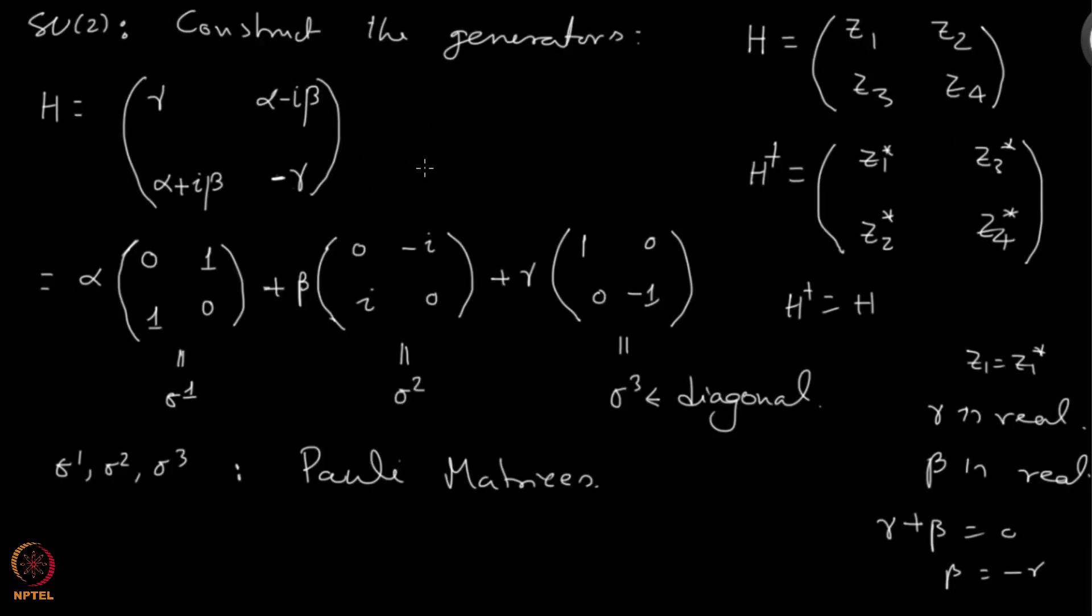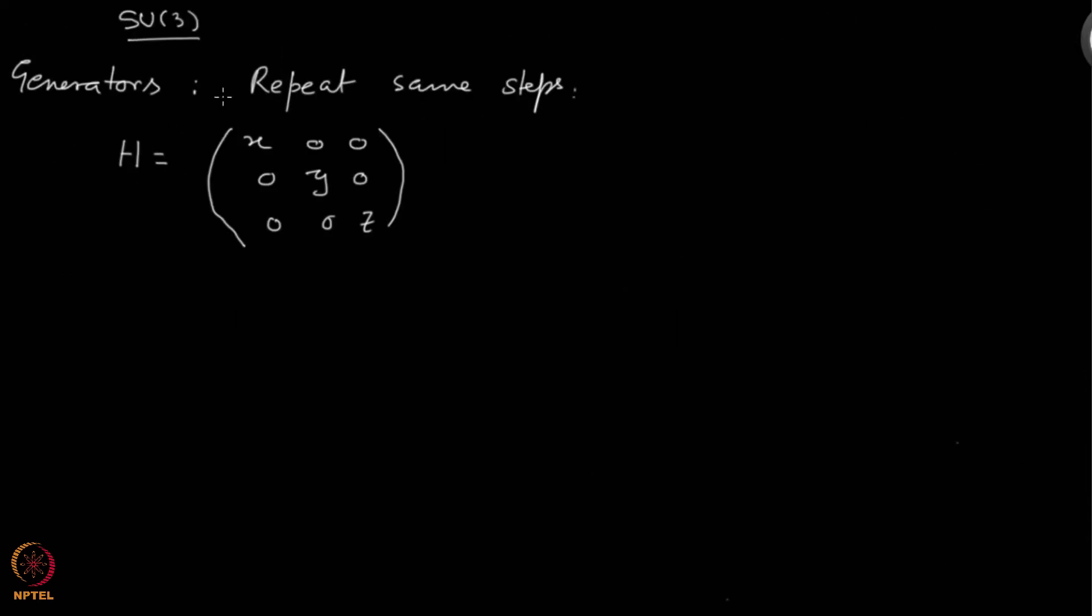When you do so, you find the following: your H will take this form, where x, y and z are real. On the diagonal entries you got real numbers rather than complex. That's going to follow from the fact that H dagger should be H. Plus you will get some complex number z2 and the conjugate will appear here.